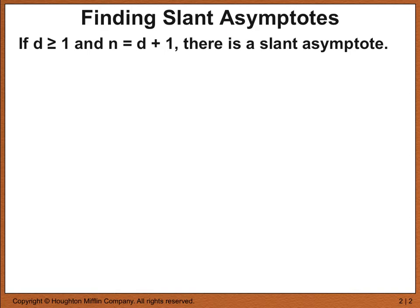A quick review about what little d is. Remember that if you have a rational function, it can be written as one polynomial over another. We often call the numerator polynomial big N of x, and we call the denominator polynomial big D of x. Little d is simply the degree of the denominator, and little n is the degree of the numerator.